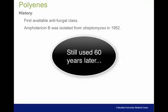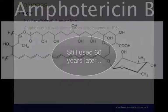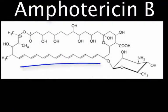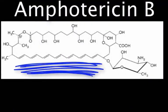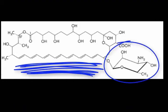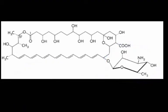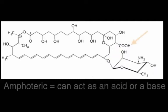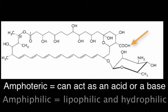Amphotericin B remains the broadest spectrum agent. This drug is made up of seven conjugated double bonds and a macrolide ring. The 'ampho' part of the name amphotericin comes from the fact that this drug is amphoteric and amphiphilic.